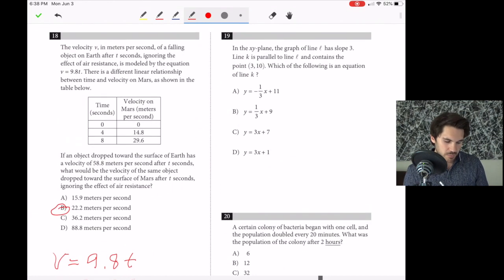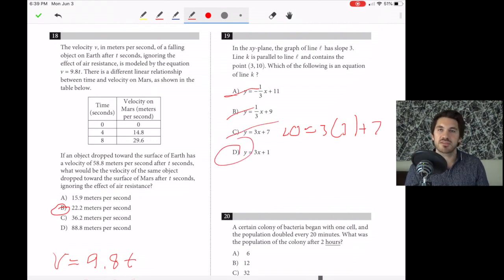Number 19. In the xy plane, the graph of line L has slope 3. K is parallel to line L and contains the point (3,10). Which is an equation of line K? If K is parallel to L, it has the same slope, which is 3. So A and B are gone. Now plug the point into the answer choices. If we plug it into C, does 10 equal 3 times 3 plus 7? No, that equals 16. So D is our answer. 3 times 3 is 9 plus 1 is 10.